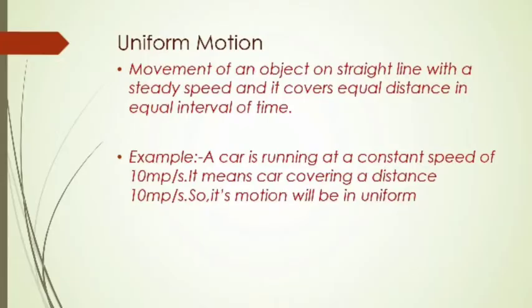Definition of Uniform Motion: Movement of an object on a straight path with a steady speed, covering equal distance in equal intervals of time.